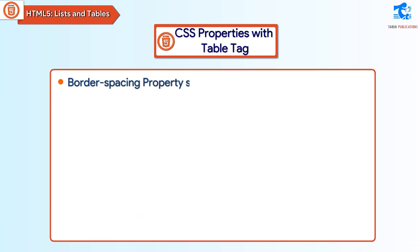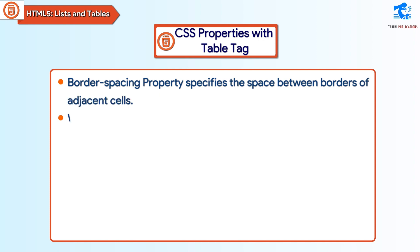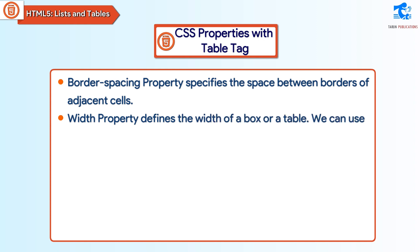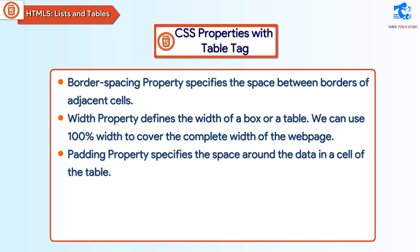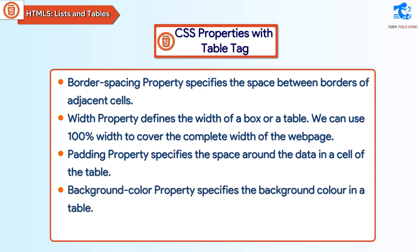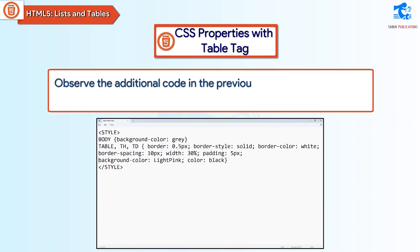The border-spacing property specifies the space between borders of adjacent cells. The width property defines the width of a box or a table — we can use 100% width to cover the complete width of the web page. The padding property specifies the space around the data in a cell. The background-color property specifies the background color in a table. The color property specifies text color in the table. Observe the additional code in the previous table to understand the usage of these properties.